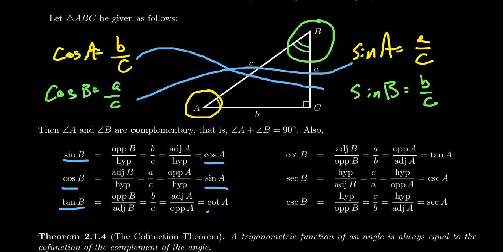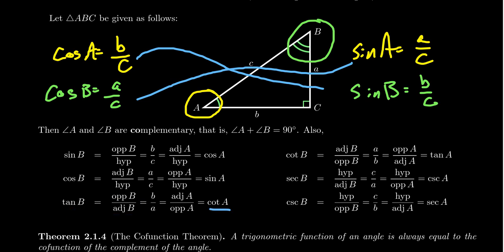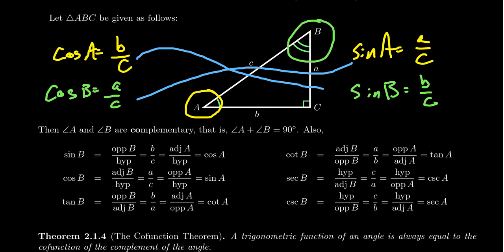Tangent of B equals cotangent of A. Tangent of B is opposite over adjacent relative to B, which is little b over A. Cotangent of A is the adjacent of A divided by the opposite of A; for angle A the adjacent side is B and the opposite side is A — the roles are reversed, but you get the same ratio. Similarly, cotangent of B equals tangent of A for the same reasons.